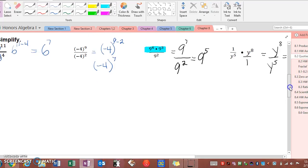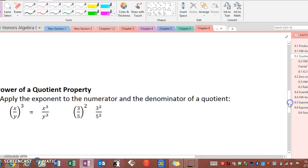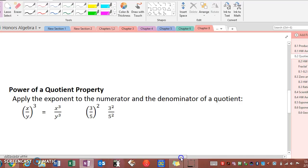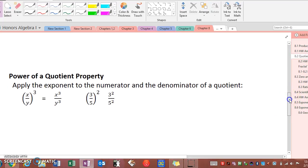Let's look at another rule. This is the power of a quotient property. Basically what this says is that when you have an expression inside parentheses and an exponent outside of parentheses, you need to apply the exponent to every part of the term inside those parentheses. So 3 over 5 raised to the second power is the same as 3 to the second divided by 5 to the second.